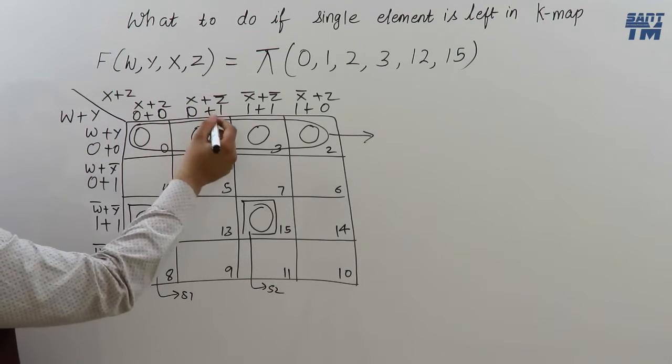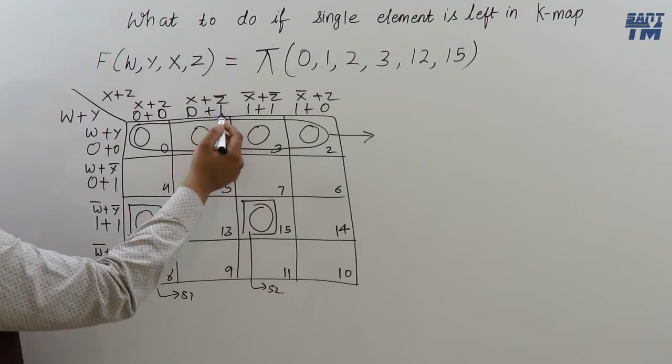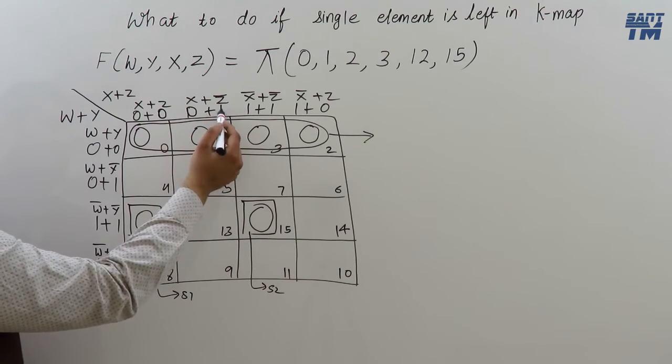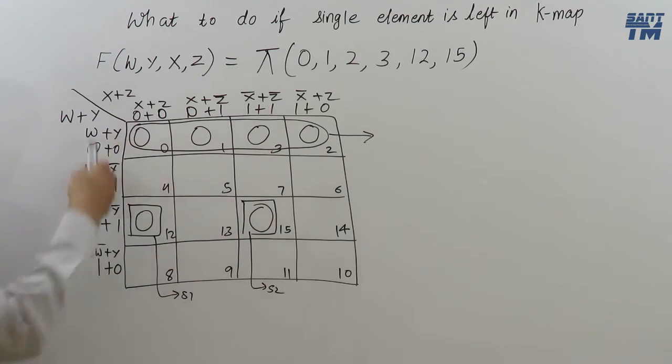X plus Z, X plus Z bar. And in case of POS, the bar will come on the element which is 1. Suppose Z is 1 here. So, Z bar is included. X and Z both are 1. So, X bar, Z bar similarly here.